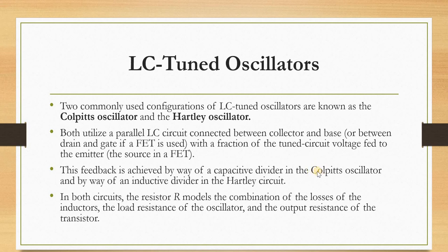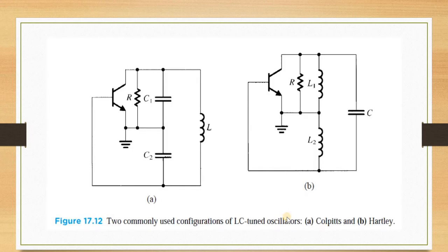Colpitts — two capacitors connected in series with an inductor in parallel. Hartley — two inductors connected in parallel with a capacitor. In both circuits, resistors model the losses of the inductors, load resistance of the oscillator, and output resistance of the transistor.